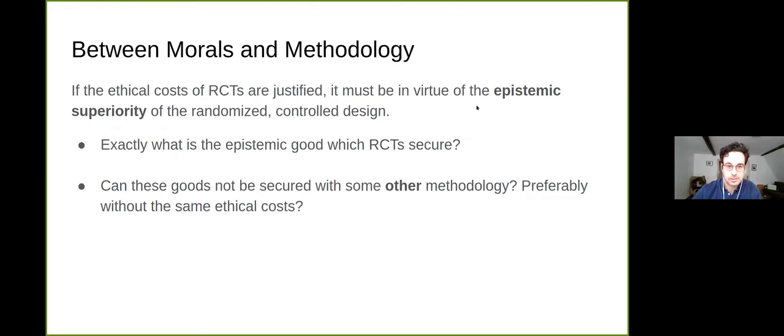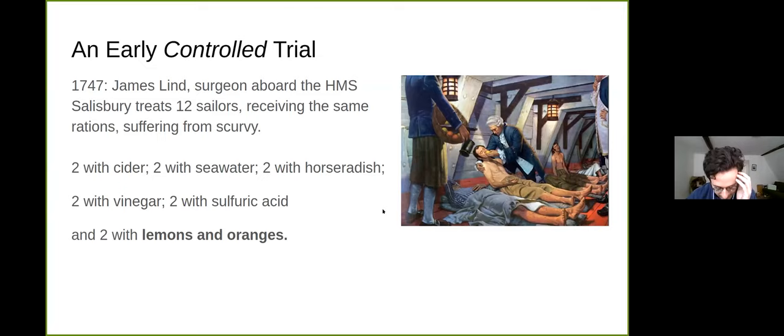The basic idea here is that if the ethical costs of RCTs are justified, then it must be in virtue of some epistemic superiority that they have. In this talk, I'm going to try to address two things: exactly what is the epistemic good which RCTs secure? And can that same good not be secured with some other methodology that preferably doesn't incur the same ethical costs?